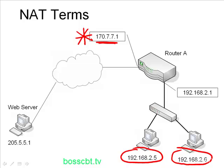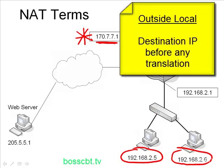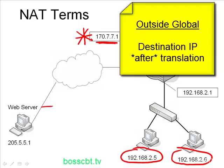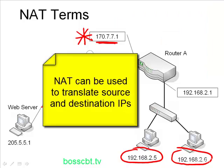There are two other terms. Outside local is the destination host — for example, the web server — before any sort of translation occurs. Outside global is the same destination host but after translation has occurred. What this means is that not only can you translate source addresses, but you can also translate destination IPs with NAT. That's a bit outside the scope of what we're working on here, but just know that it exists.